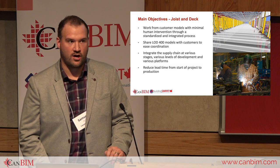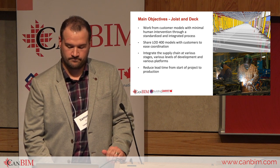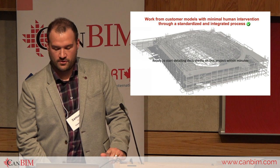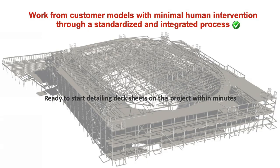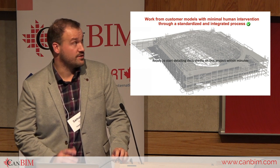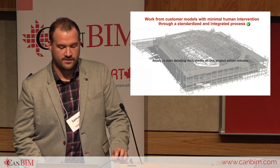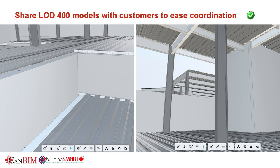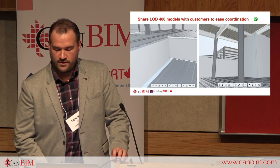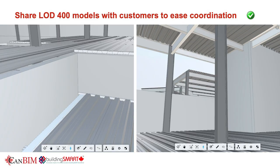We established four main objectives for our BIM process. First, work from customer models with minimal human intervention through a standardized and integrated process. Second, share LOD 400 models with customers to ease coordination. Third, integrate the supply chain at various stages, levels of development, and platforms. Fourth, reduce lead time from start of project to production. We want to streamline and optimize data transfer at every stage of a project. The model shown here is a Revit model from the New York Islanders Arena. We are able to import this LOD 400 model and start detailing deck within minutes when we apply our design tools.